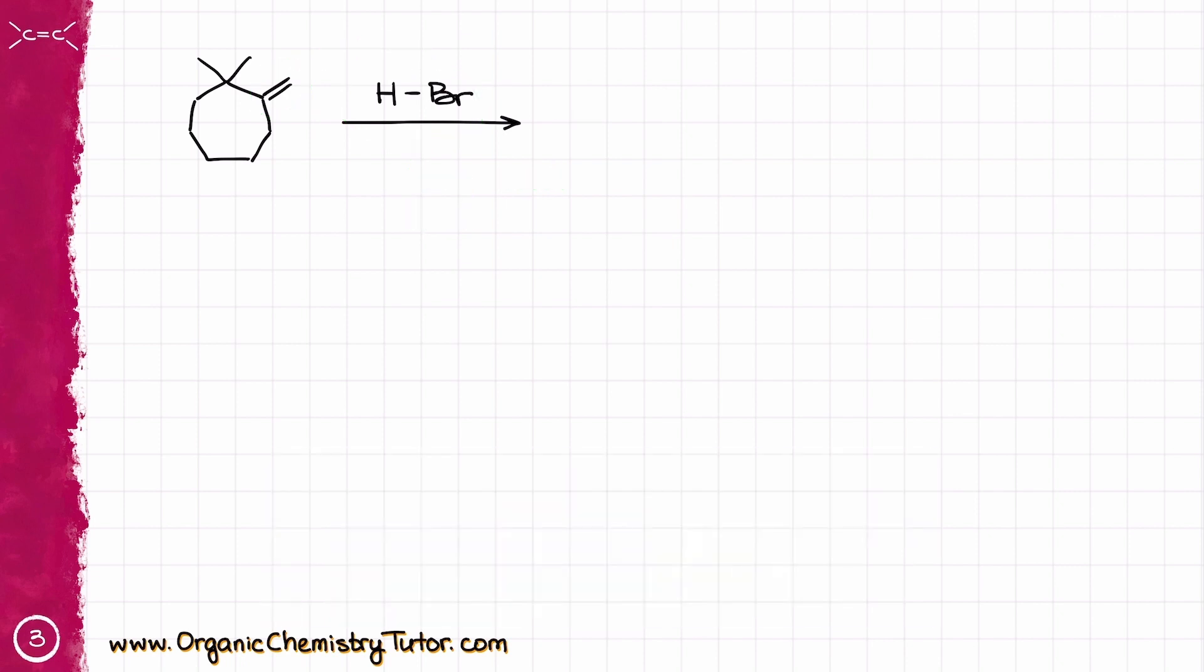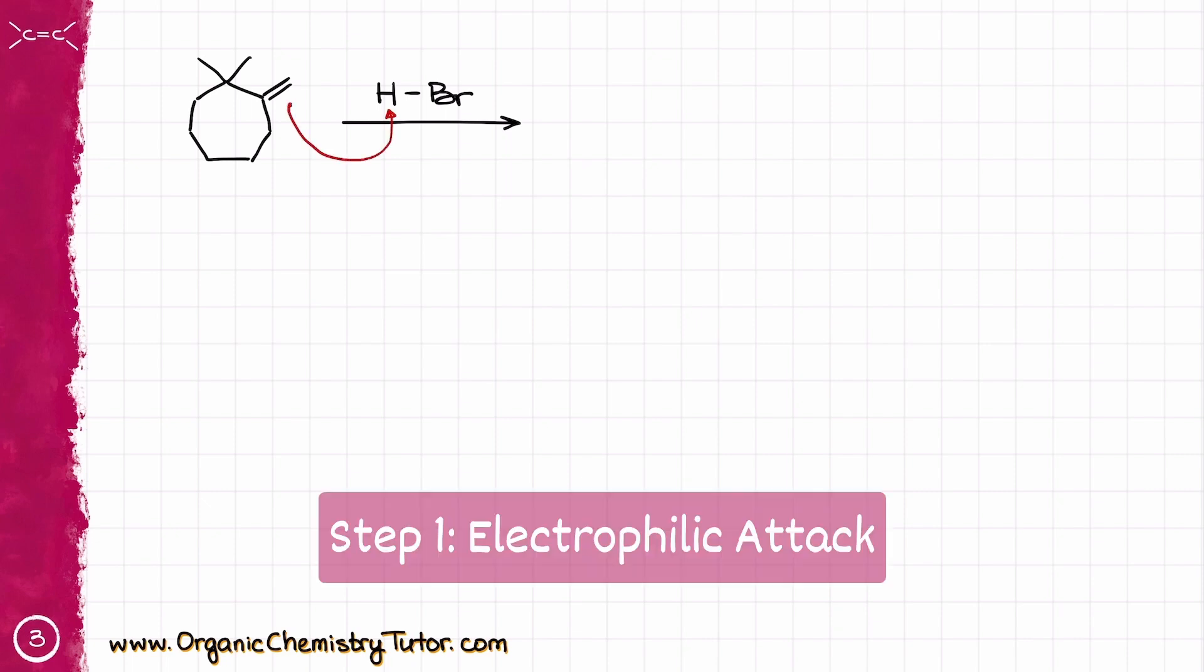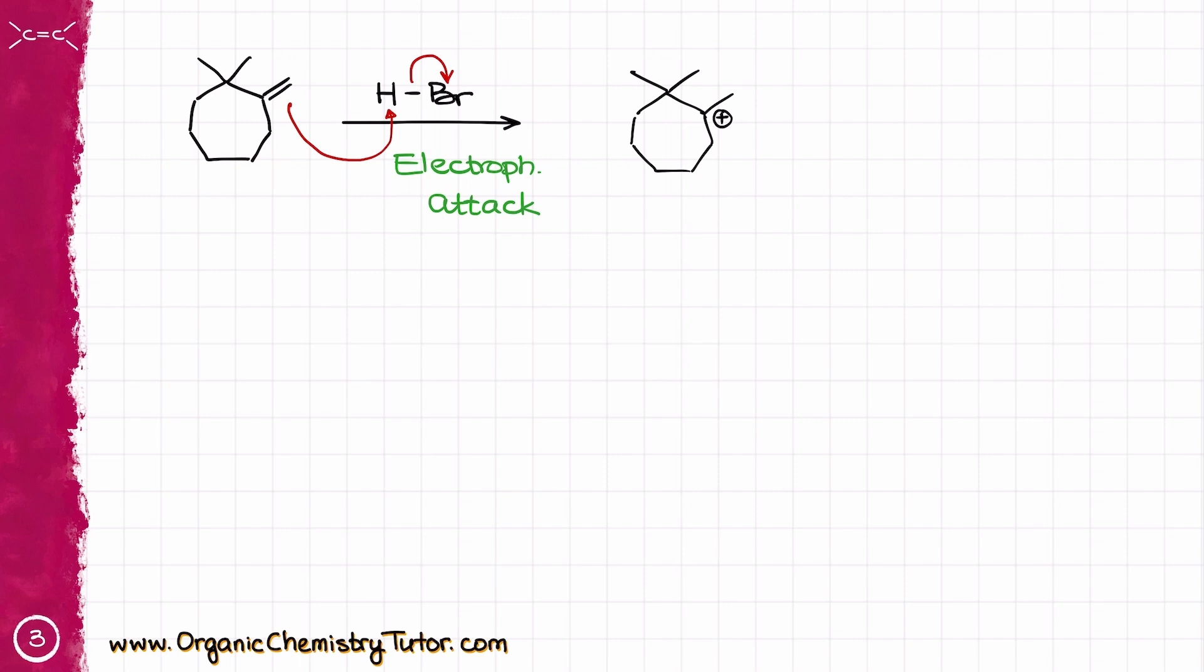Let's break it down step by step and see what we're going to get. The first step in the hydrohalogenation of alkenes is going to be the electrophilic attack from our HBr onto our double bond, which is going to produce the following carbocation.